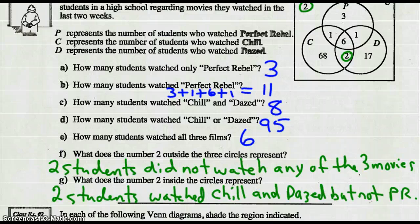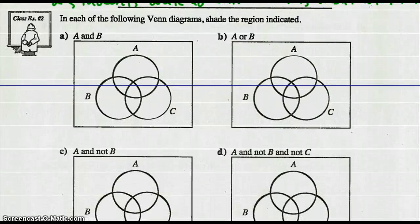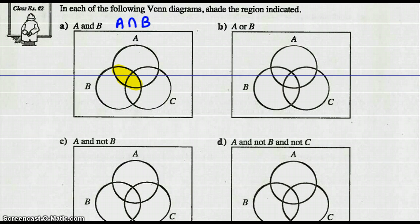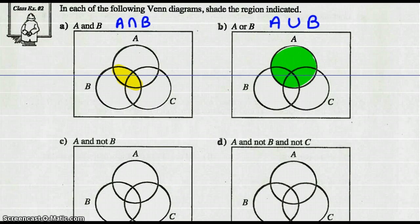Let's go to Example 2. In Venn diagrams, shade the region indicated. A and B — that would mean A intersect B. The region of A intersect B would be that overlapping region. A or B — that would be A union B, so all of A combined with all of B.